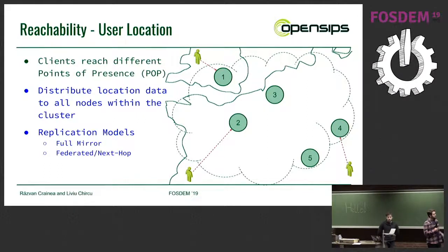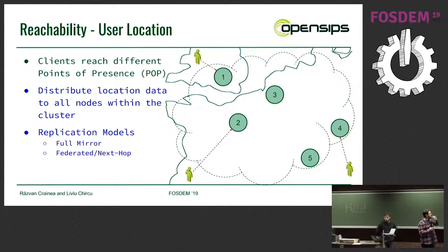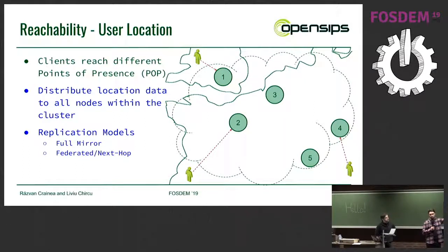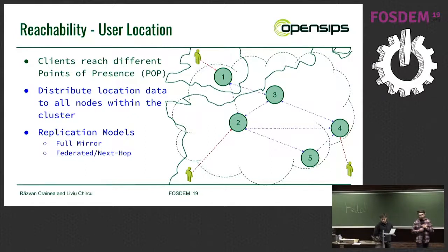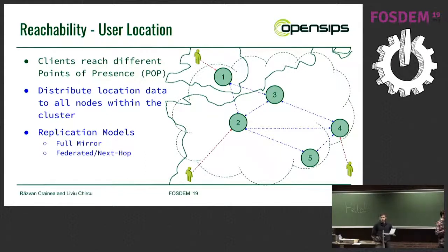Here are a few use cases for a unified platform. First: user location. Imagine different clients registered — some in London, some in Germany, some in Paris — each using a different entry point in the platform. If the guy from London calls the guy from Paris, he doesn't know where the other user is. In order to handle this, we need to distribute location data among all POPs, so that node one, when a call arrives, knows that the endpoint is registered in node two.